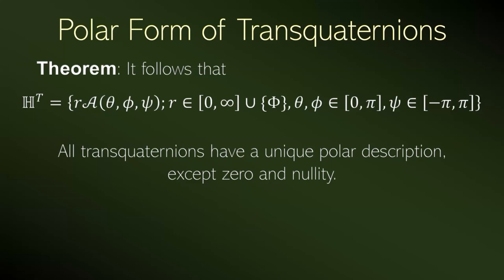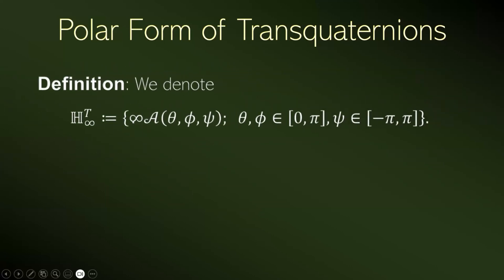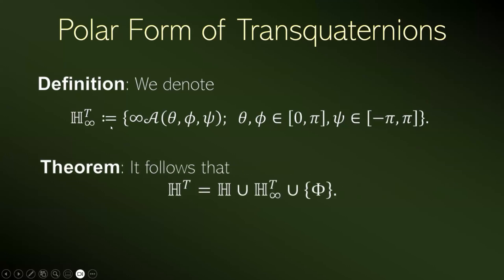We denote the set of all transquaternion numbers with infinity radius as ℍ^T_∞. In this way, we can see the transquaternion numbers split into three kinds: the quaternion ones — the ordinary quaternion numbers — which are the numbers with finite radius; the infinite transquaternion numbers; and the number nullity, which is zero over zero.